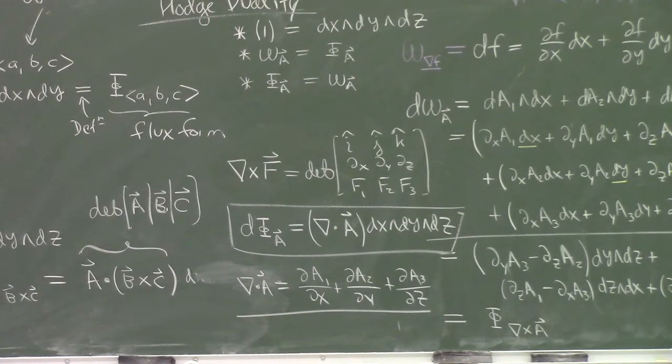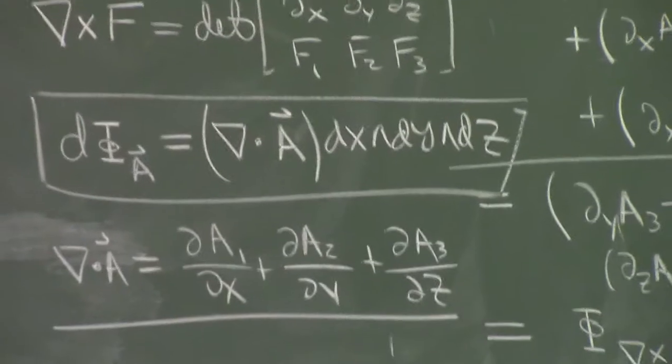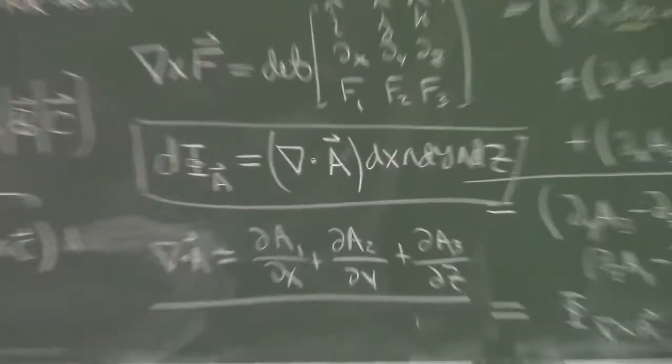And then this is homework, the one that's in a box there. I'll make it one of your homeworks to show that the exterior derivative of a flux form is actually the divergence of the vector field times dx wedge dy wedge dz. So that would be one of your homeworks.